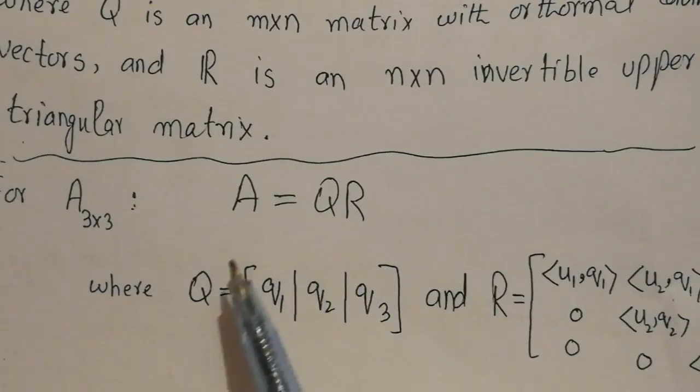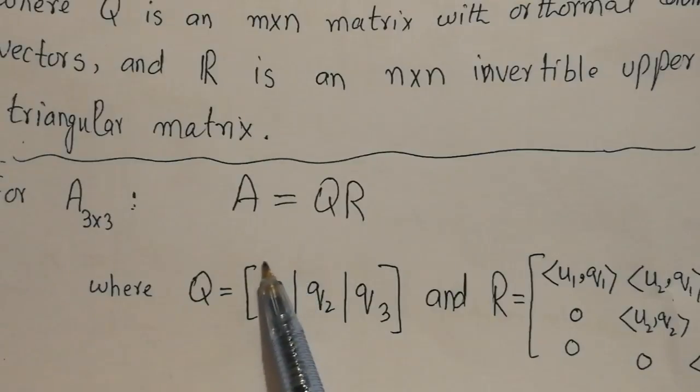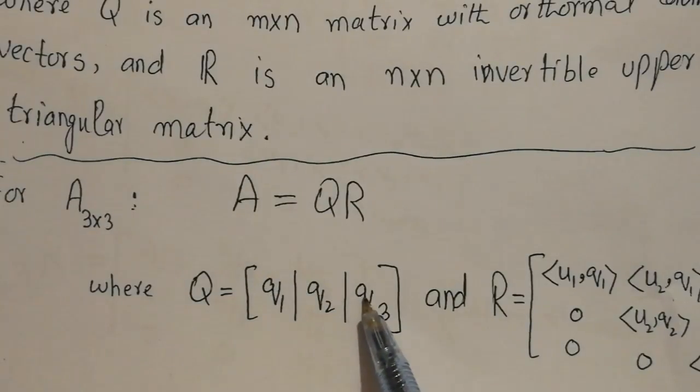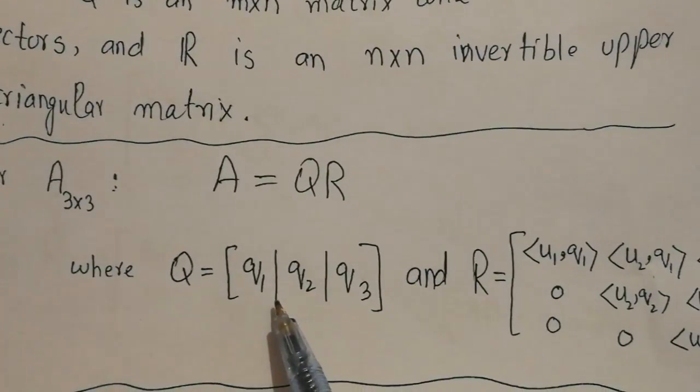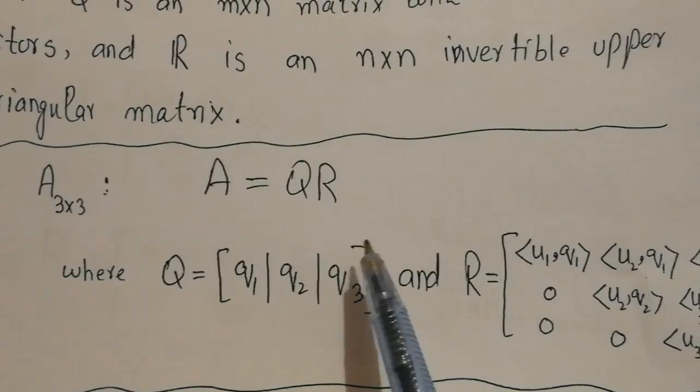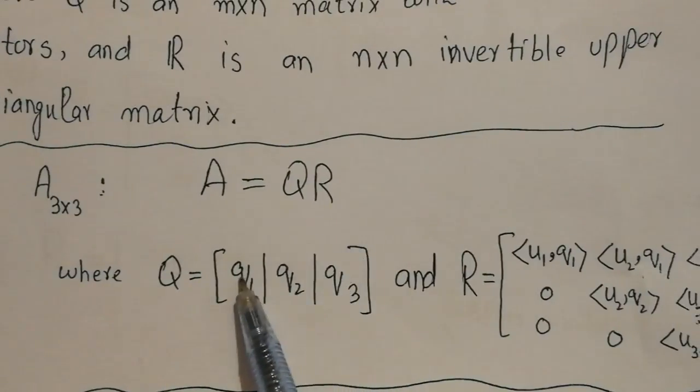Q is a matrix whose columns are Q1, Q2, and Q3. These vectors are the outcome of the Gram-Schmidt process followed by normalization. After obtaining Q1, Q2, and Q3 and arranging them as columns, we get the matrix Q.